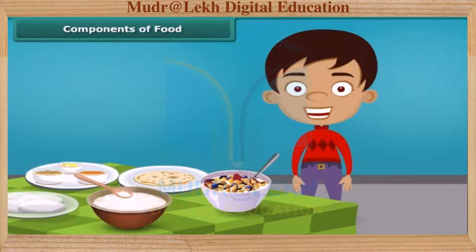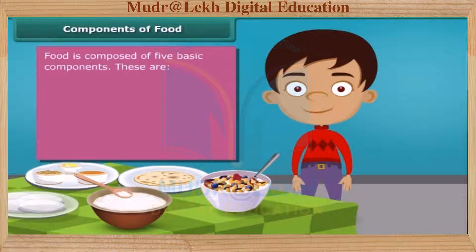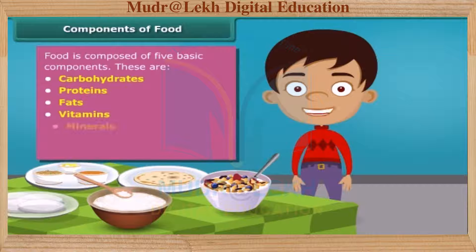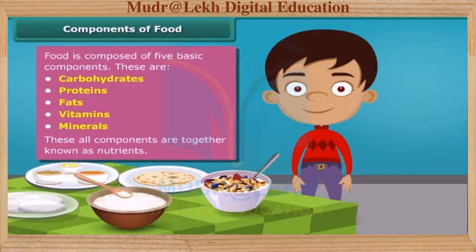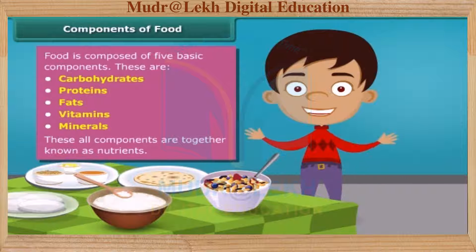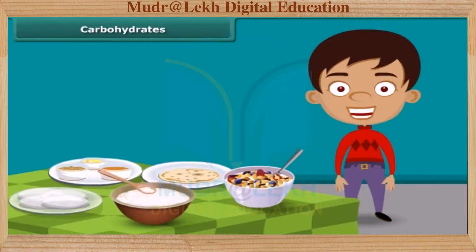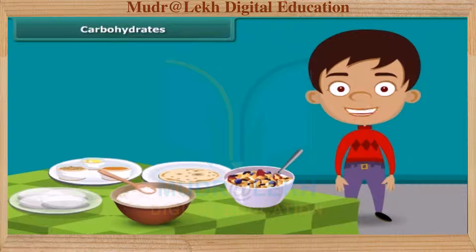Now, a question may arise that how do we get energy by eating food and why food is known as fuel for our body? Friends, food has five basic components in it. These are carbohydrates, proteins, fats, vitamins and minerals. All these components together are called nutrients. A body digests food and absorbs these nutrients to provide energy. Some nutrients help us fight against diseases. Each food item contains all nutrients in different amounts and each nutrient plays a different role in the body. Let us know about these nutrients one by one in detail.